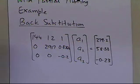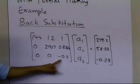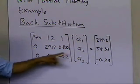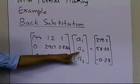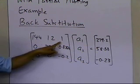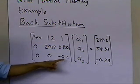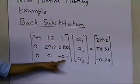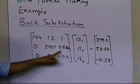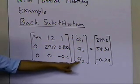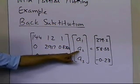In back substitution, we work backwards. We start from the last equation to find a3, then the second last equation to find a2, then the first equation to find a1. In the last equation, a3 is the only unknown. In the second equation, there are two unknowns, a2 and a3, but since we just found a3, we only have one unknown, which is a2.